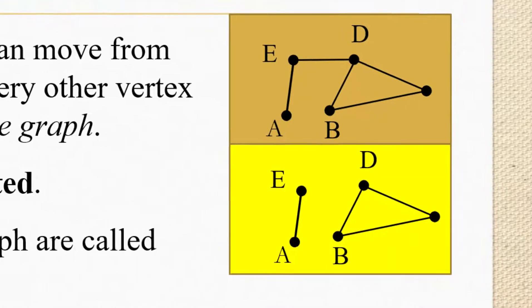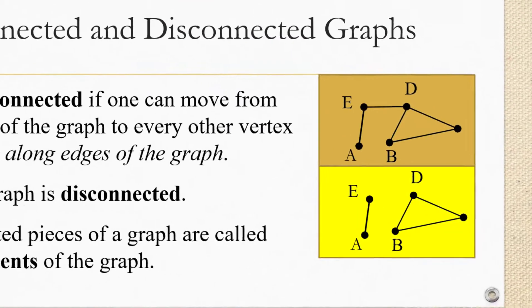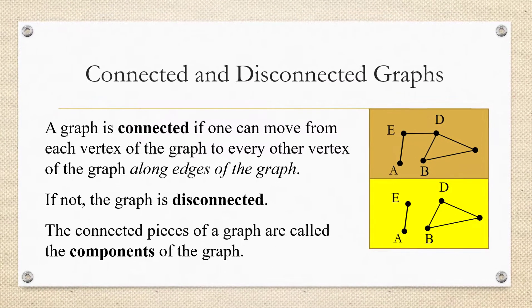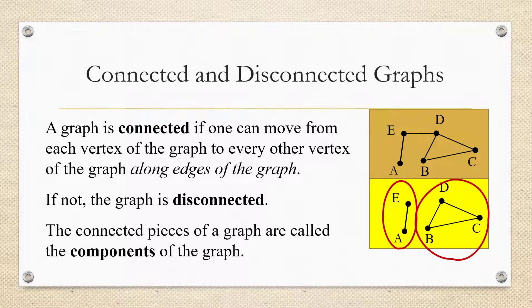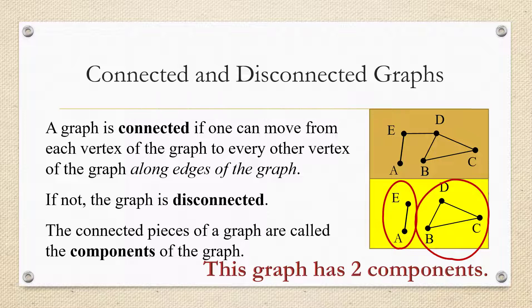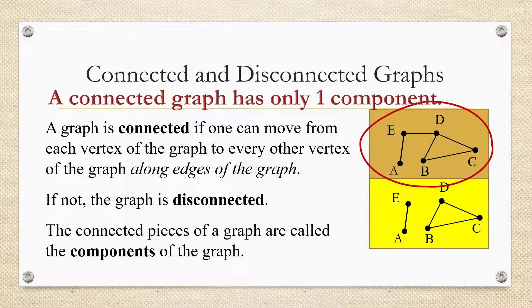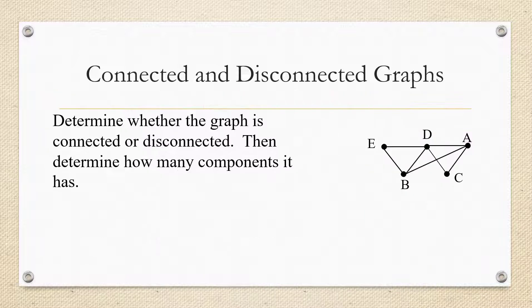The connected pieces of a graph are called the components of the graph. For example, this disconnected graph in yellow has two components: the component containing A and E, and the component containing B, C, and D. Any connected graph only has one component.